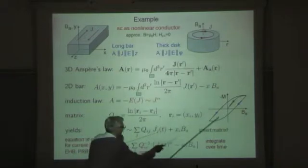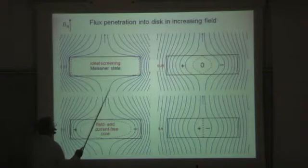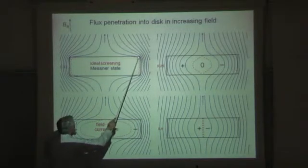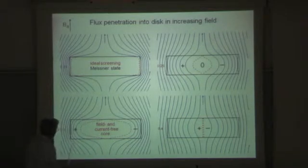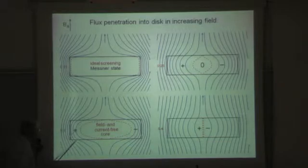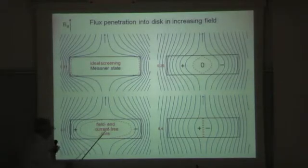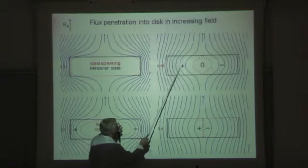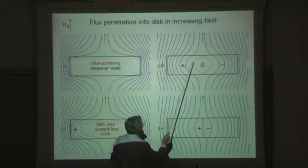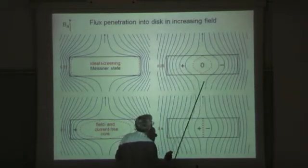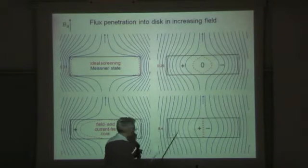When you have a thick disk in applied field, then first when the applied field is not strong, then there is only a small sheet of current penetrating. So when you go higher with the applied field, the current density is constant here and it's zero in the core, in the field and current free core. And then when you increase the applied field more and more, the magnetic field penetrates more. And this dashed line is a contour line where the current is one half Jc. And then at some time you have full penetration. Then there is no more zone in the middle and you have these magnetic field lines.